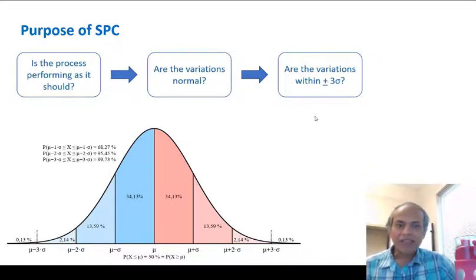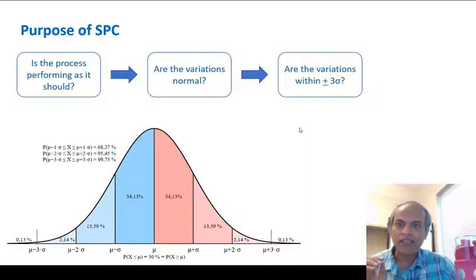So having done this, now comes the next part: how do we make these charts? First thing is we need to define what are we trying to control. So for example, there are two big items here: variables and attributes. Variables is anything that can be measured. So you need a scale or some kind of reference to measure this, it's called variable.